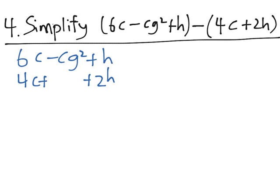Now I'll add in a plus 0 cg squared term so that all the terms have something matching. And now we want to subtract. On the right-hand side, we have h minus 2h, which gives us minus h.